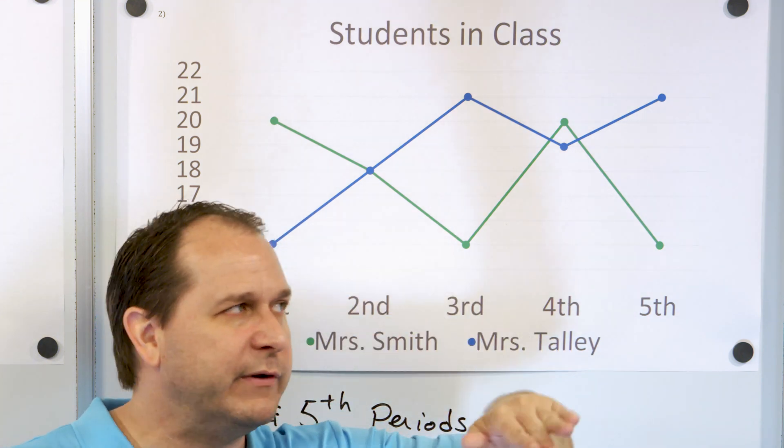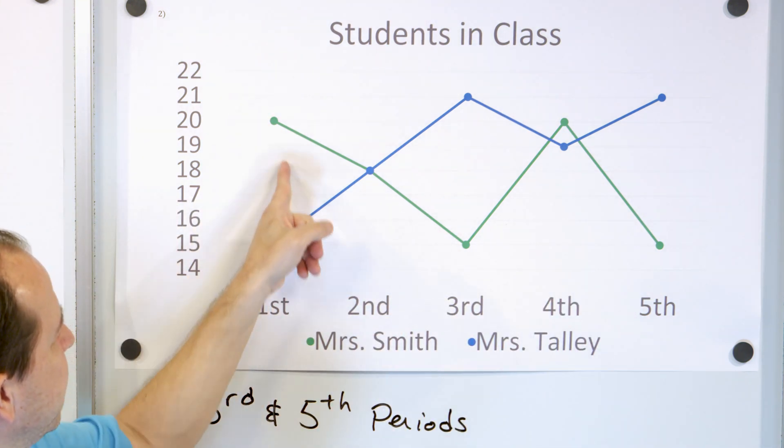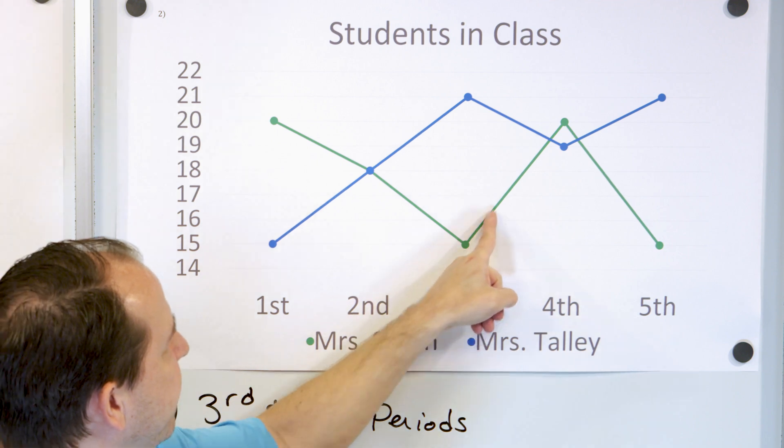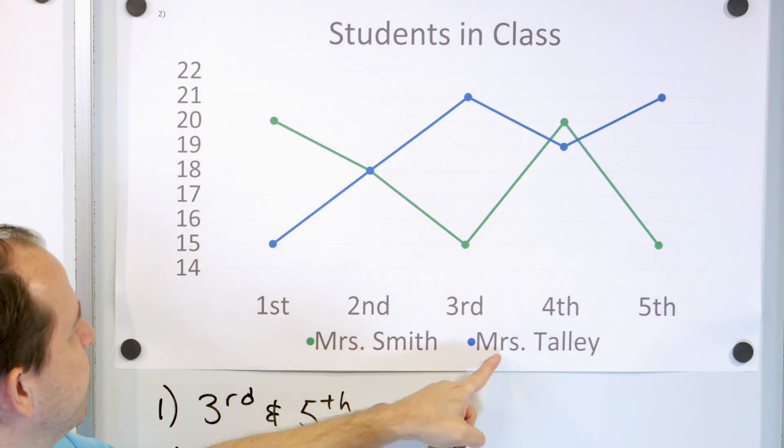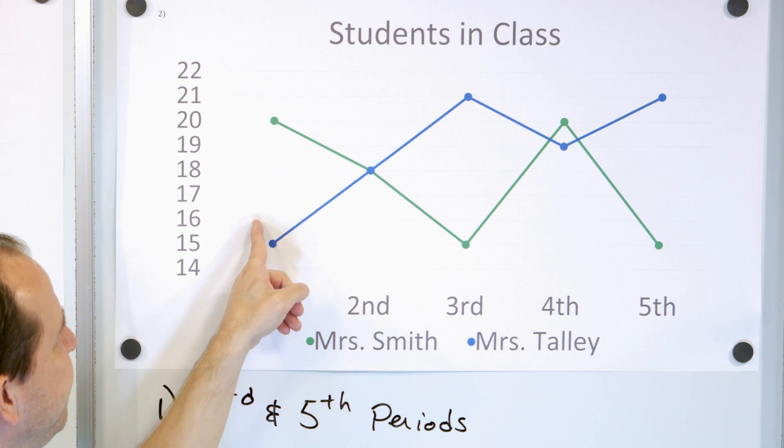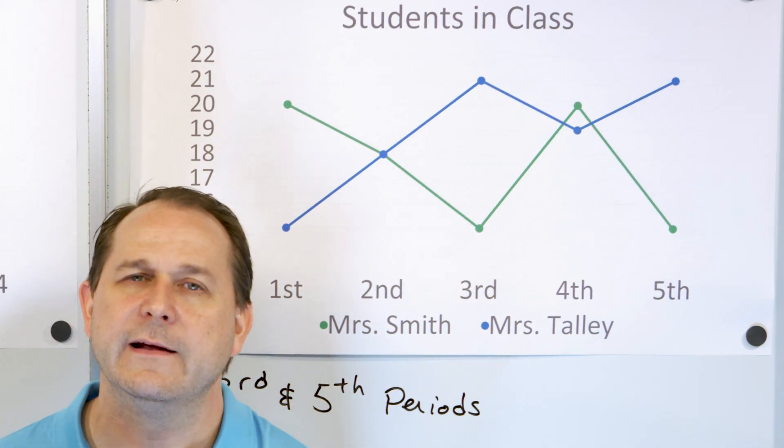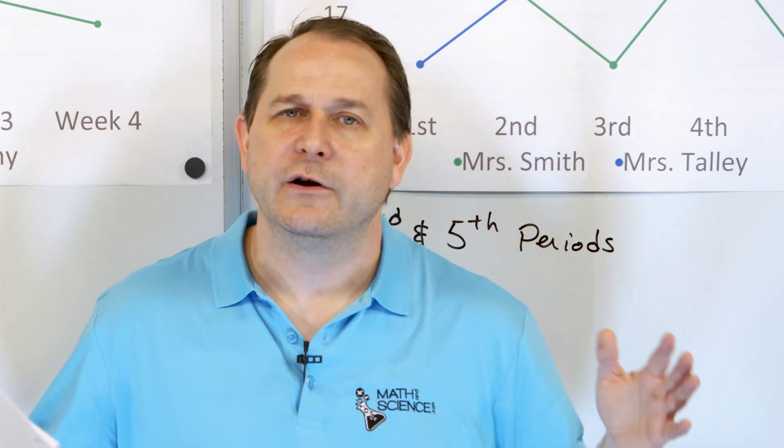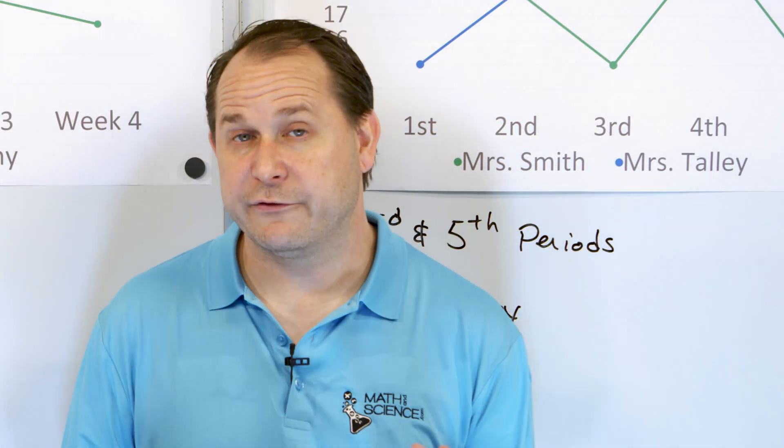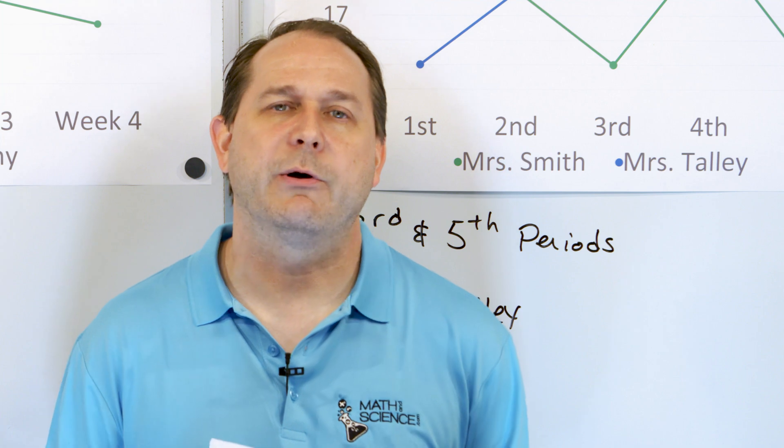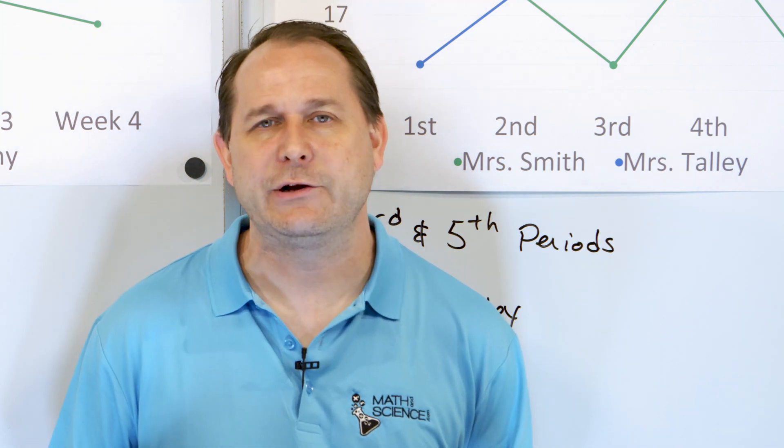The green line here, Mrs. Smith, is all over the place throughout the day. Whereas the blue line here, Mrs. Talley, looks like she has fewer students in the morning, but then more students in the afternoon. So you can use it to find trends. I'd like you to go through this yourself. Make sure you can understand and answer these questions. Follow me on to part two. We'll wrap up the concept of line graphs.